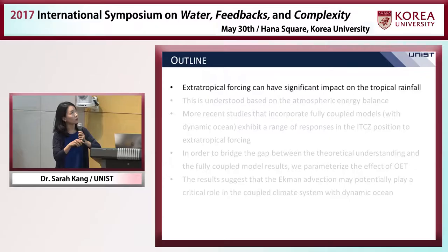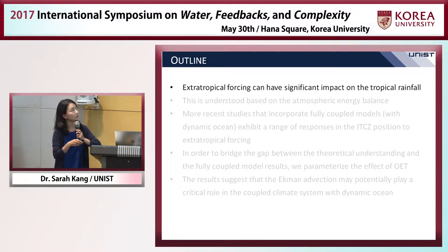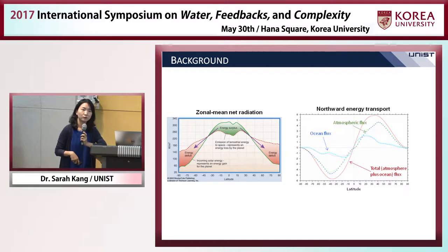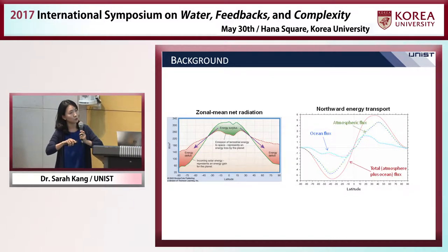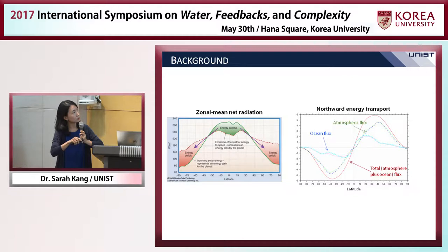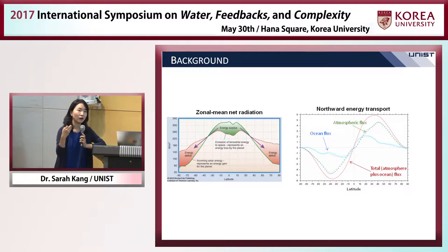I will start by showing that extratropical forcing can have significant impact on tropical rainfall. But first, let me give you some background. Here is the zonal mean net radiation plot. The x-axis is latitude from South Pole to North Pole. This green line shows the amount of net solar radiation reaching each region — obviously, there is more insolation reaching the low latitudes than the high latitudes.